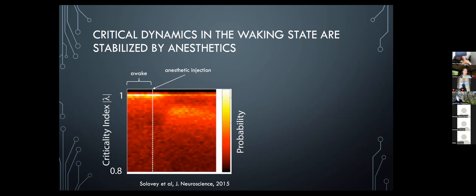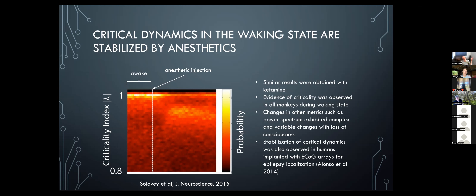Most of the decrease in critical eigenvalues was in the higher-frequency range around gamma. ECoG provides a broader dynamic range of signals than EEG, which attenuates signals at higher frequencies. This was done with different anesthetics and in humans undergoing epilepsy surgery who were implanted with similar electrodes. In every case, the dynamics are stabilized. This measure distinguishing awake from unconscious brain dynamics performs better than conventional measures, such as looking at whether there is more or less of a particular oscillation like delta.